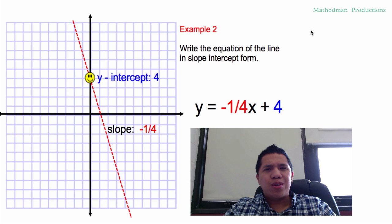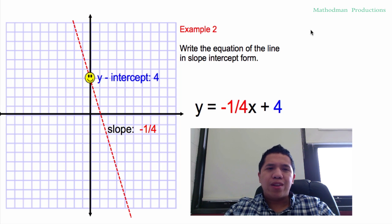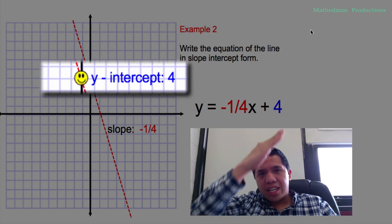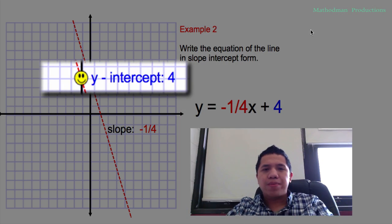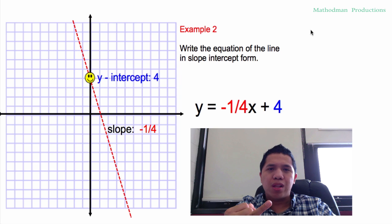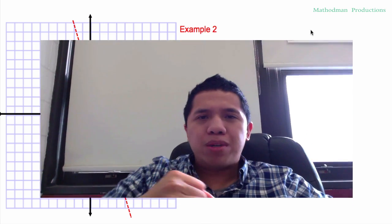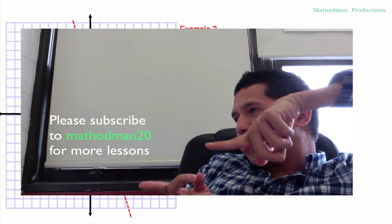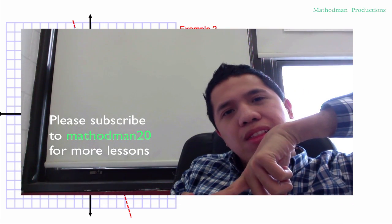The answer is y equals negative one-fourth x plus four. Remember, y-intercept just means where the graph hits the y-axis, where they intersect. If you have a y-intercept and a slope, it's easy to write slope-intercept form. Remember to subscribe to Method Math 20 for more math lessons.